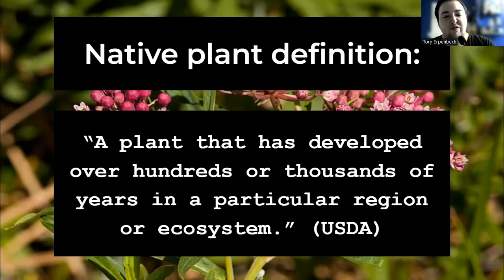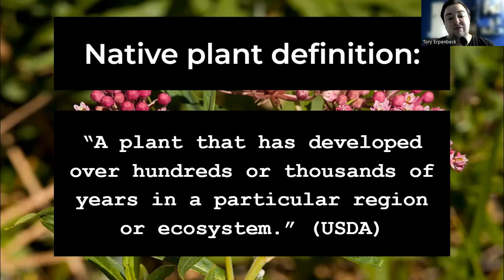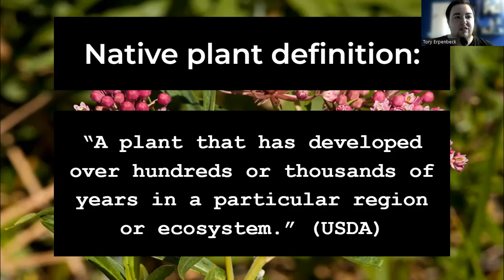A native plant is a plant that has developed over hundreds or thousands of years in a particular region or ecosystem — something that was not introduced by humans, something that evolved in a specific place and is supposed to be there. It's a part of the ecosystem.